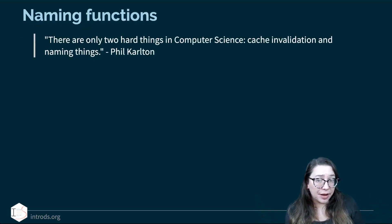Let's also talk a little bit about naming functions. So here's a quote from Phil Carlton. There are only two hard things in computer science, cache invalidation and naming things. And cache invalidation is knowing when an object you have saved has changed actually, so you should be updating it. And naming things is also really hard.